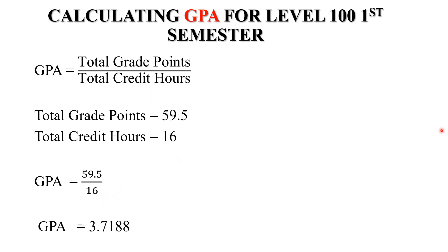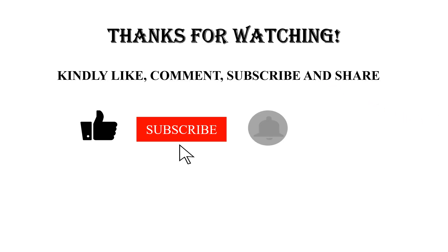The GPA is 3.7188. So to four decimal places, the student had a GPA of 3.7188. If you want to find the GPA for a semester in your year of study, just find the total grade point and divide by the total credit hours, and you will get your GPA. Thanks for watching — kindly like, comment, subscribe, and share. See you in the next video.